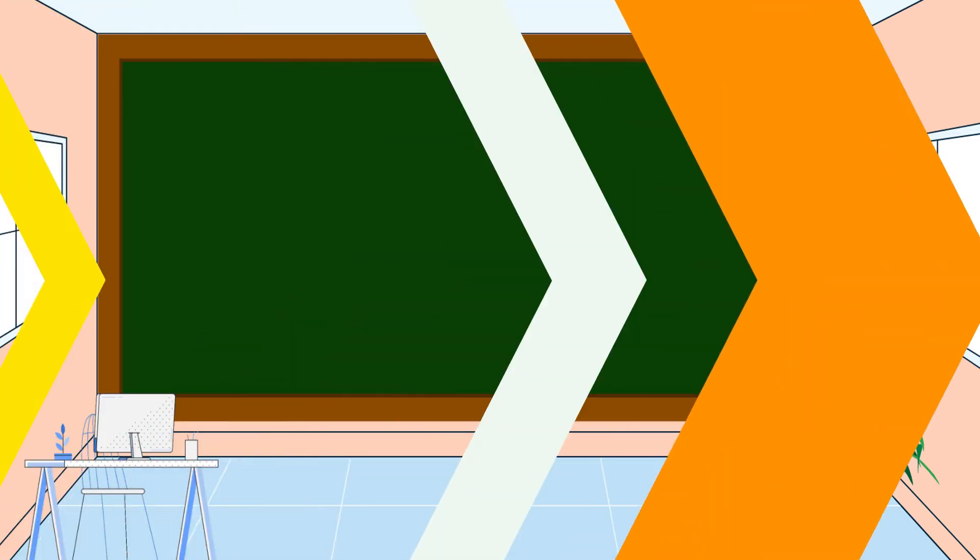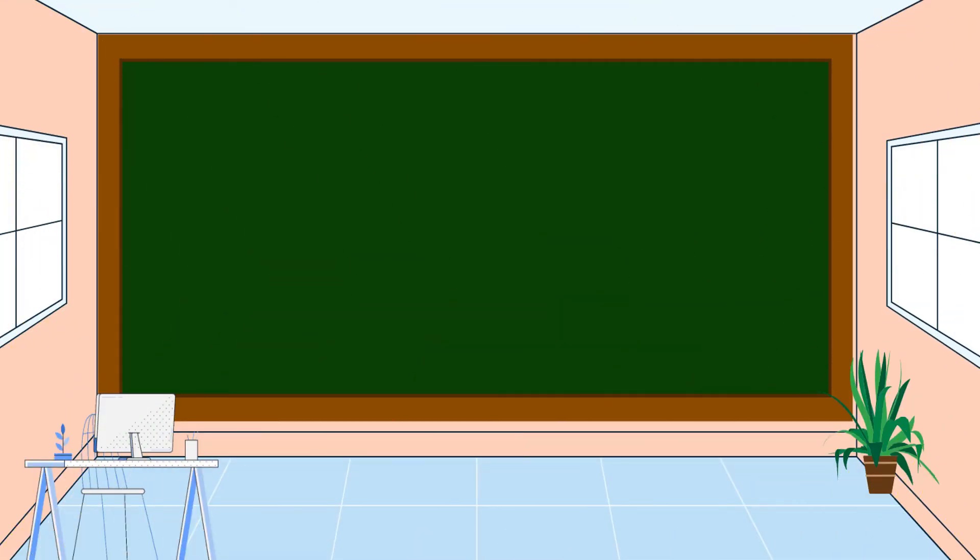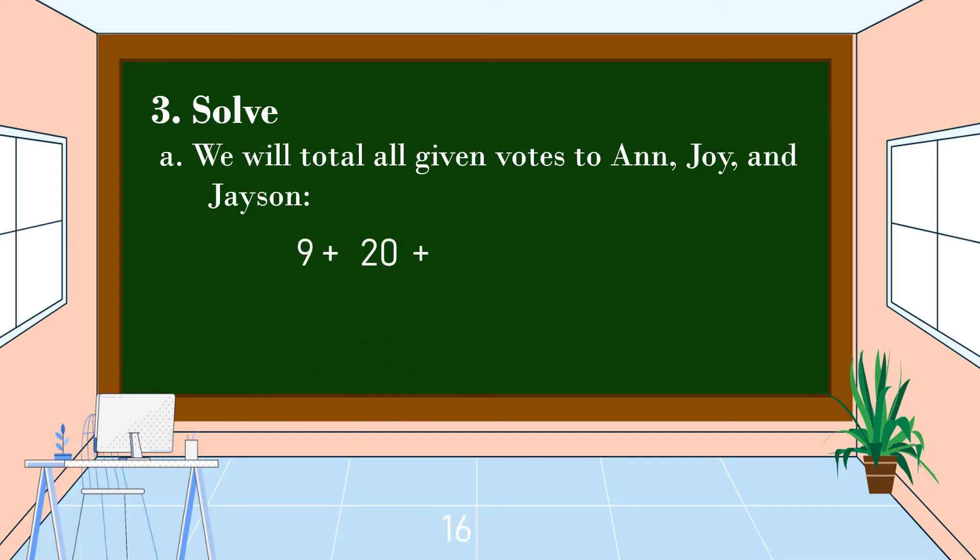Alright, we have already a plan. What is the next step? Very good, the next step is we're going to carry out the plan. Let's solve the problem. We will total all the given votes to Ann, Joy, and Jason. So we have 9 plus 20 plus 16 is equal to 45. This means that 45 pupils were present last Tuesday and three pupils were absent.